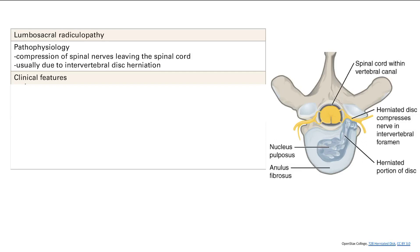Lumbar sacral radiculopathy is a common cause of back pain. What happens is that you have spinal nerves leaving the spinal cord to go out where they need to be around the body. When they get compressed, this is called radiculopathy. I specified lumbar sacral because that's the location — the lumbar or sacral part of the body — where it often happens, leading to back pain.